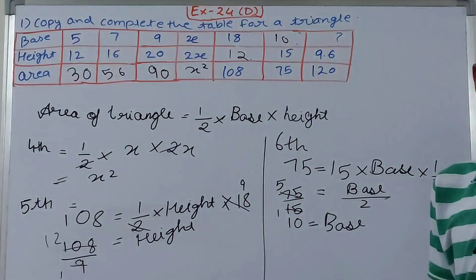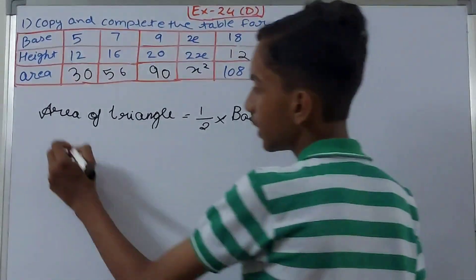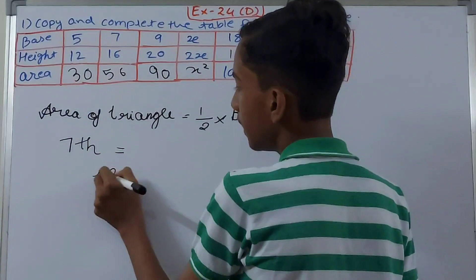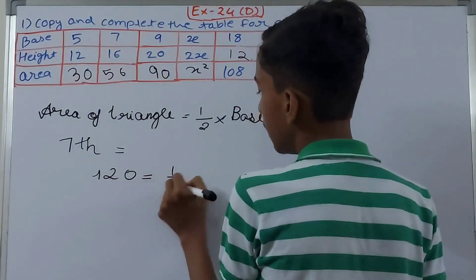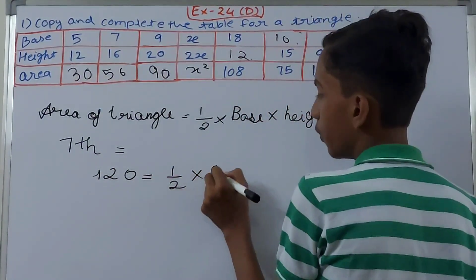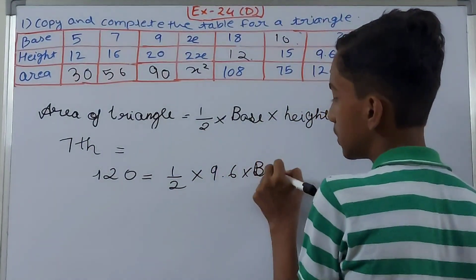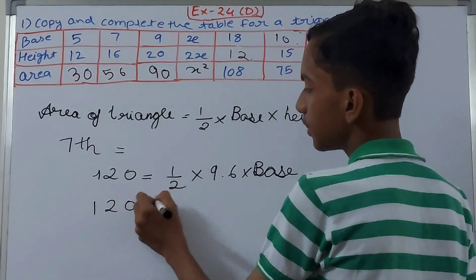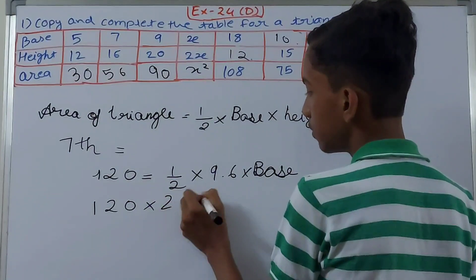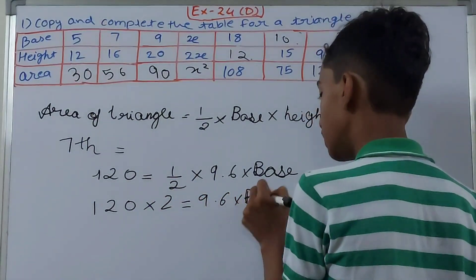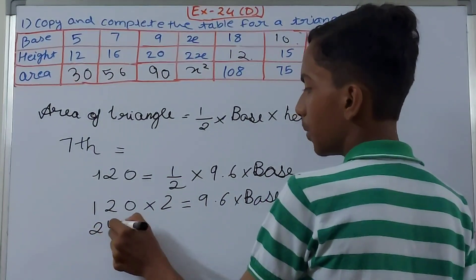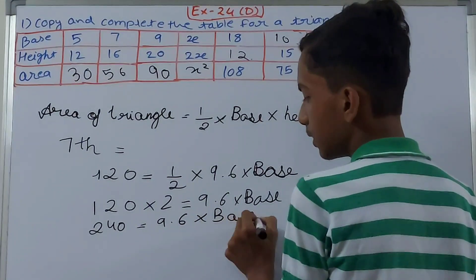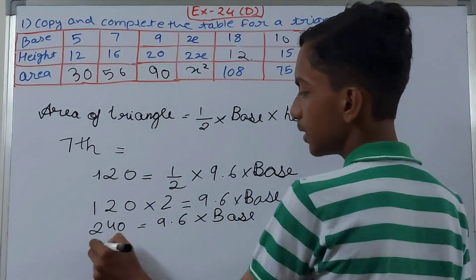Then the seventh part. Area is 120 equals 1/2 into height 9.6 into base. Take this 2 here, into 2 equals 9.6 into base. So 240 equals 9.6 into base. 9.6 comes here so it will divide. 240 divided by 9.6 equals the base.